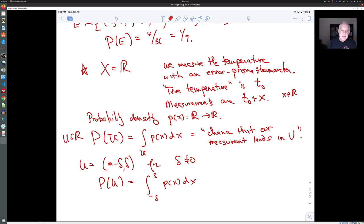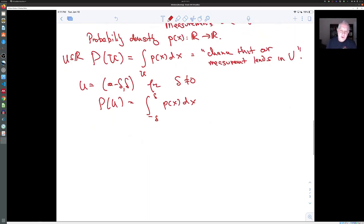And probably the most famous and important probability density is the normal distribution. And it's defined by the following formula. P_sigma of X is one over sigma times the square root of two pi times e to the minus X squared over two sigma squared. And here, sigma is a parameter called the standard deviation.